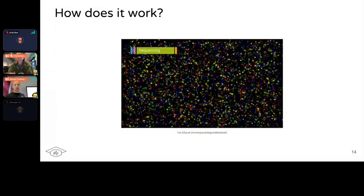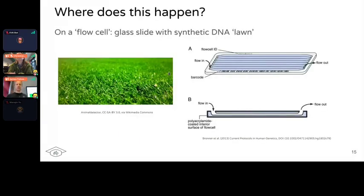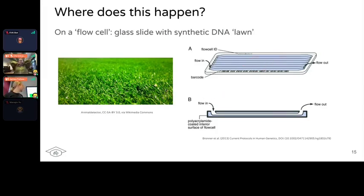What you're actually looking at is a top-down view of what is called a flow cell with a synthetic DNA lawn on it. The flow cell is essentially a glass slide, but this glass slide has embedded on it synthetic DNA nucleotides — nucleotides made in the lab and bound to the top of the glass. There are millions and millions of short synthetic DNA molecules on it. Your DNA sample is injected in, and the DNA molecules complementarily bind to these synthetic DNA molecules to spread across the entire flow cell and reconstruct a lawn.